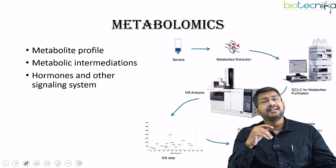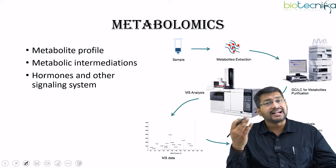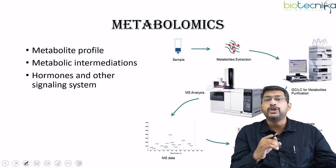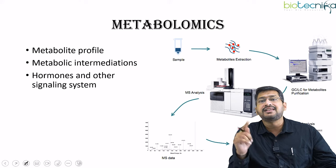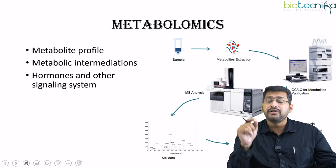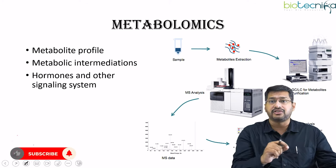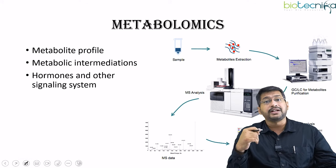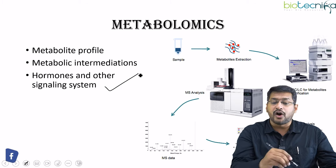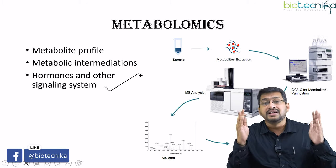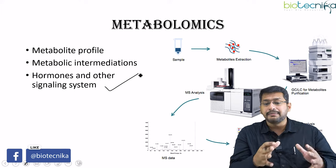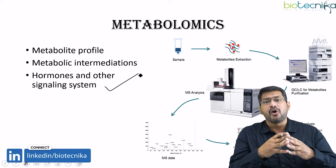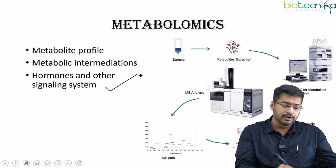In metabolomics, we profile individual metabolites — either anabolites or catabolites — and also study the various intermediates of metabolism being produced. When talking about metabolism, we cannot exclude hormones and their signaling systems. All signal transduction systems come under the metabolome, and the study of all this in one consortium is called metabolomics.